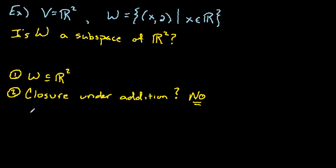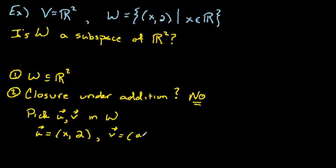Look, if you pick a vector like U, so let's say U and V are vectors in set W. So U looks like anything in the first component, we'll call it x, and it has to have a 2 in the second component to live in W. I mean, that's the rule for living in W. And then vector V, we'll call it something like a, different letter, and 2 in the second component.